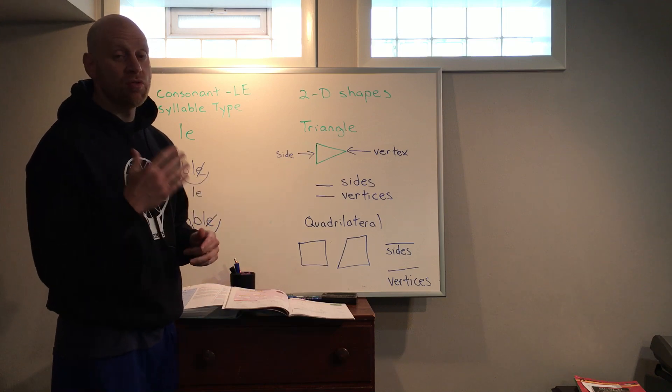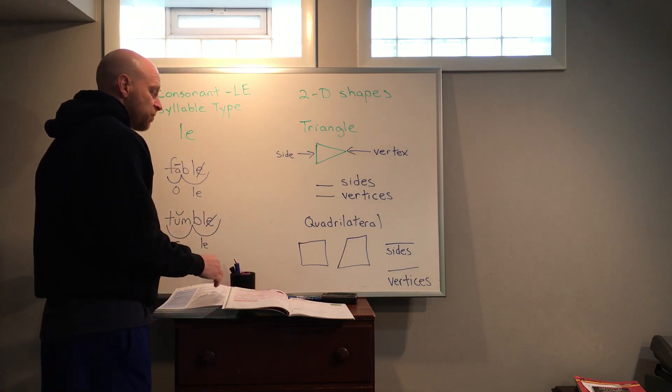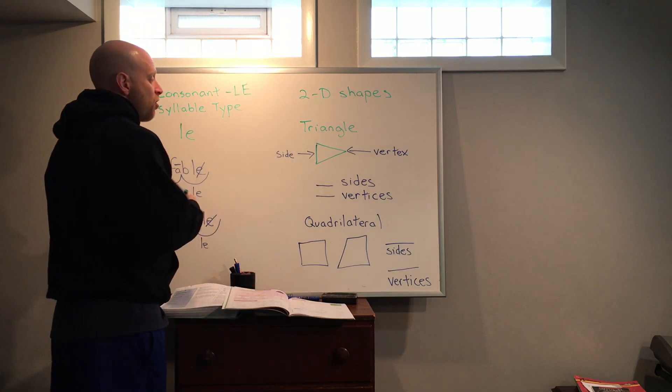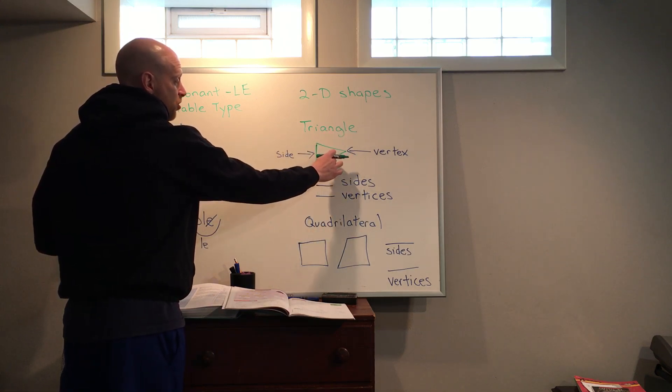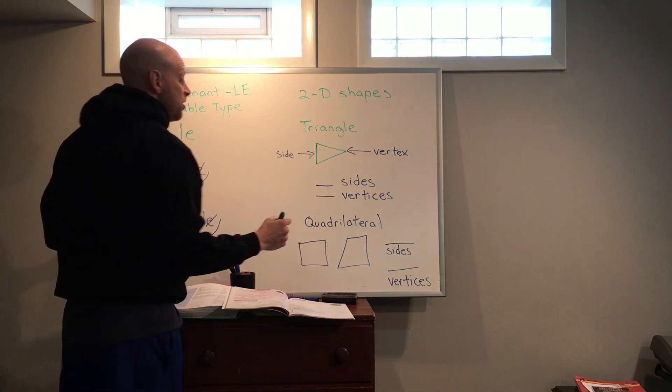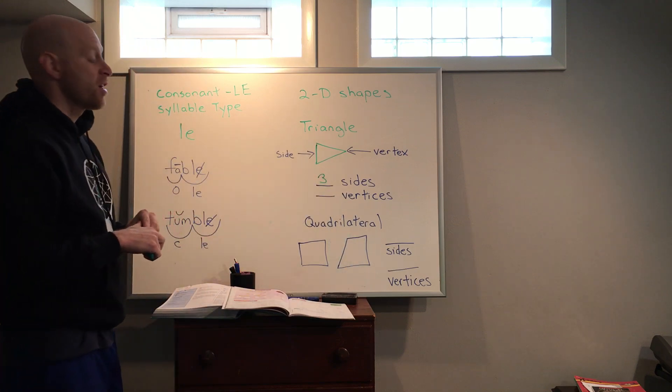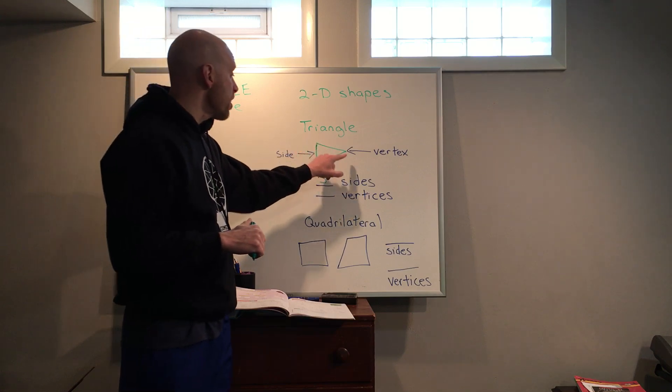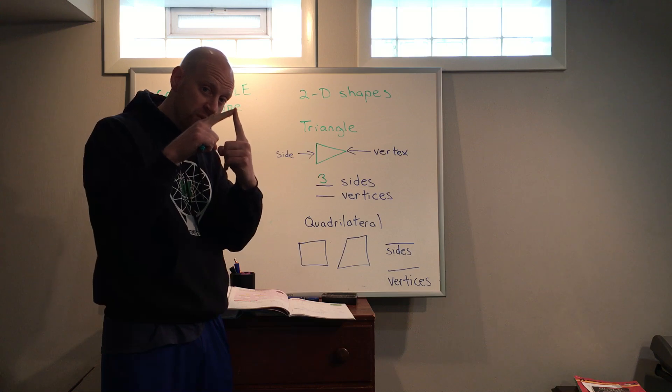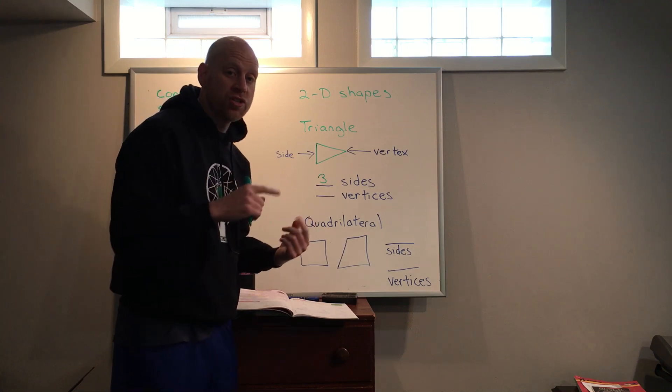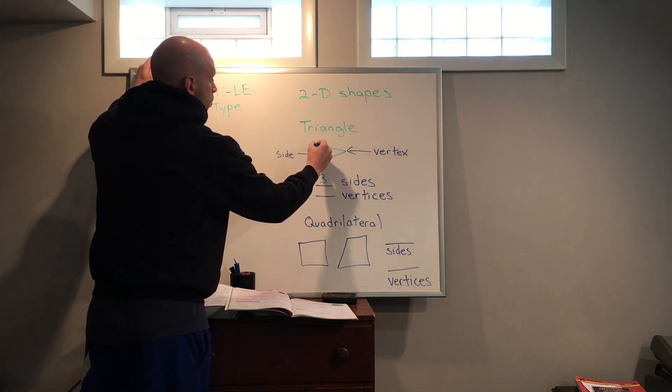Here's our example. A triangle. A triangle we know has three sides and that's something that you guys probably already know. But these sides are these lines. So there's one side here, two sides there, three sides there. So as far as a 2D shape, the triangle would have three sides.